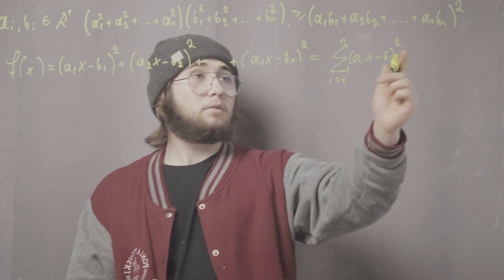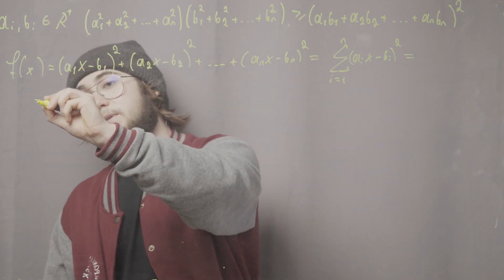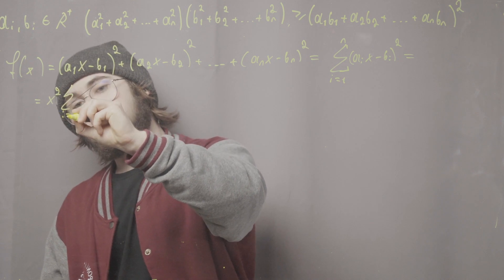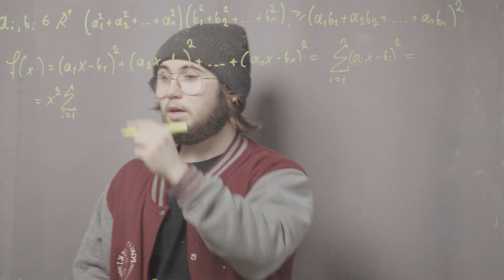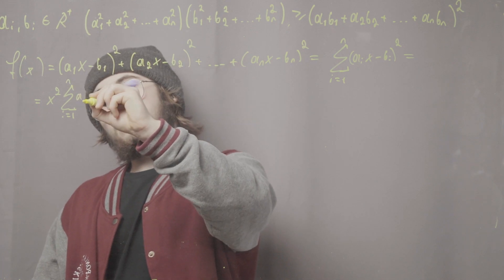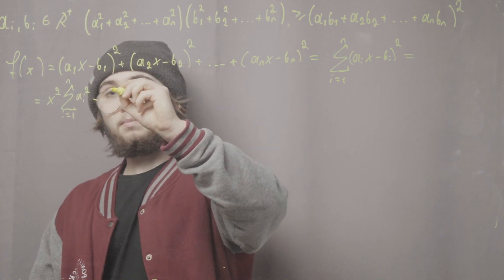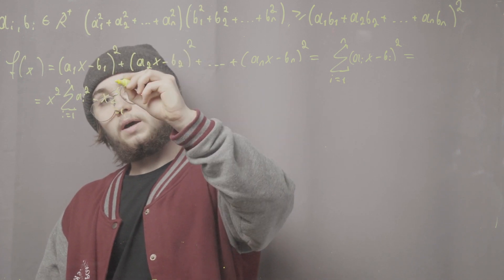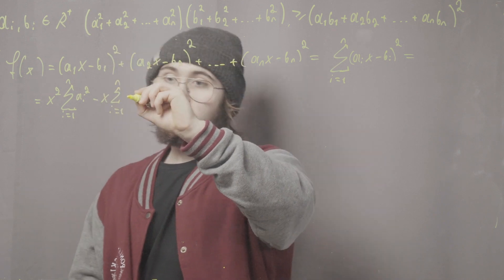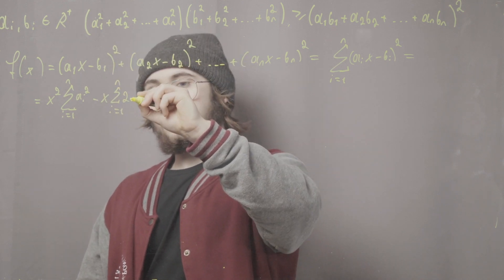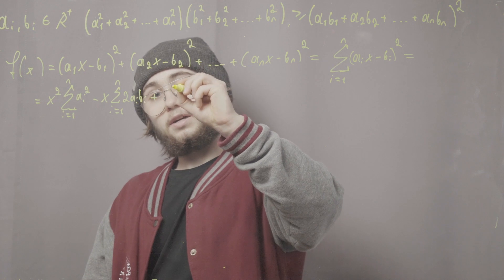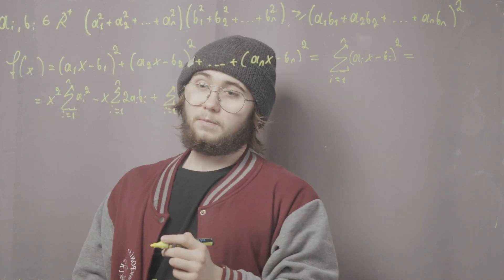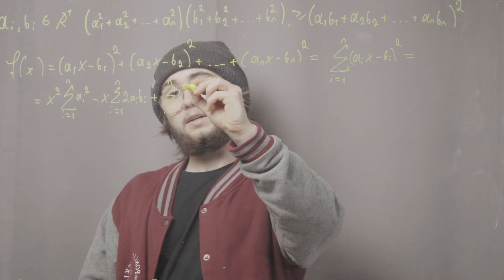We can expand f(x) to get x² multiplied by the sum from i=1 to n of aᵢ², minus x multiplied by the sum from i=1 to n of 2aᵢbᵢ, plus the sum from i=1 to n of bᵢ².